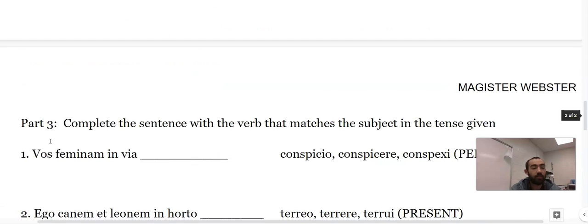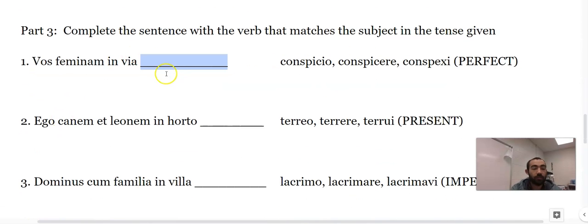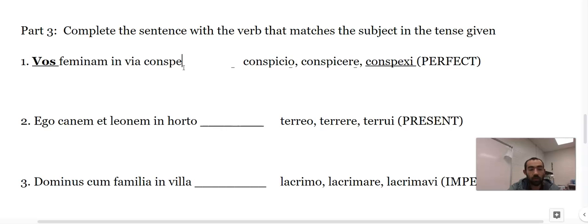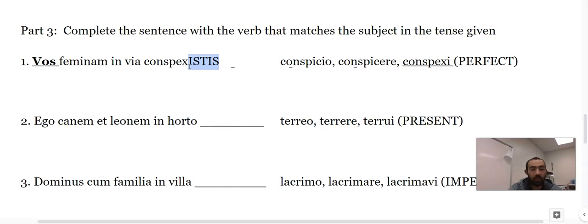Sounds about right. It's an actor. Okay, vos is y'all. Now we're back to like part one, so this is a perfect tense that comes from here, so it's going to go conspexistis - that's my ending if it's y'all. This next one's ego - canem and leonem are not the subject here, they are direct objects. Ego terreo, that's it.